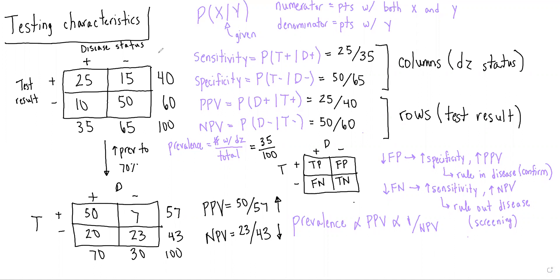Most of these questions are going to start with a two-by-two table, such as the one in the upper left-hand corner, where they'll tell you there are 40 patients who have a positive test result — among those, 25 have the disease. There are 60 patients with a negative test result — among those, 50 do not have the disease. Tell me the sensitivity, specificity, PPV, and NPV.